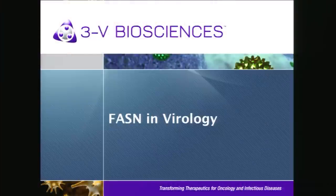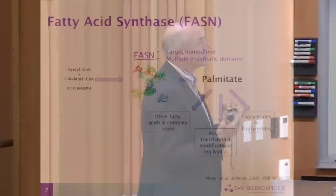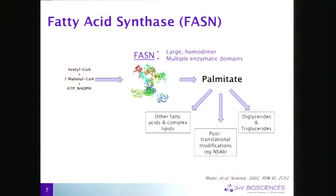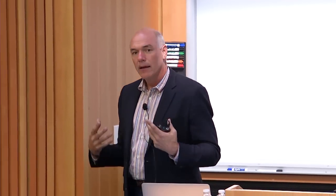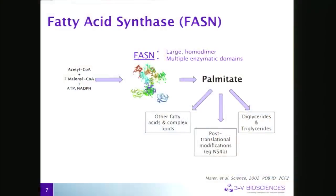The case study I'll spend most time on is FASN — the fatty acid synthase gene — and its application in virology. FASN is a key enzyme in the fatty acid synthesis pathway. It's a large homodimer with six enzymatic domains. It takes one molecule of acetyl-CoA and seven two-carbon malonyl-CoA units, building up to a 16-carbon palmitate — the only enzyme in our bodies that makes palmitate. That palmitate goes on to energy storage in diglycerides and triglycerides, ceramides, and importantly post-translationally modifies certain proteins — for hepatitis C, the NS4B protein is palmitylated.